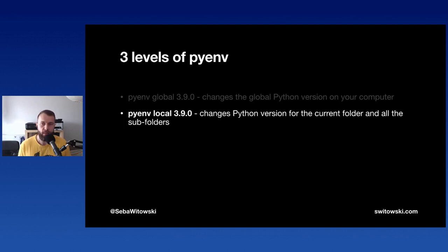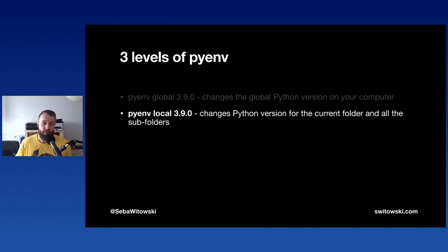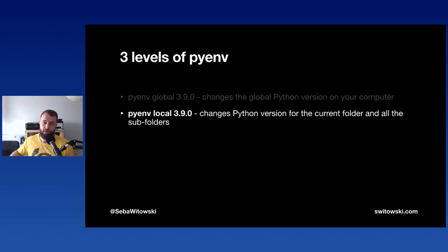Then there's `pyenv local`. Imagine you mostly work with Python 3.9 but have one project that requires Python 3.7. Instead of switching the global version back and forth, you can set a local version. Run `pyenv local 3.7` inside the project folder and it sets the version for that folder and all its subfolders. Whenever you navigate into it, pyenv automatically detects and switches the Python version, and switches back when you leave.